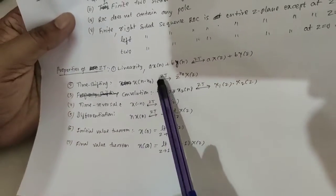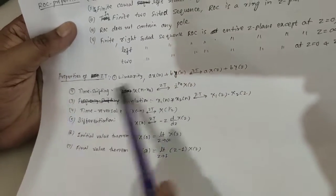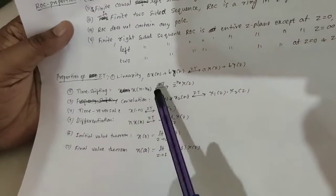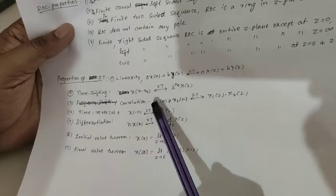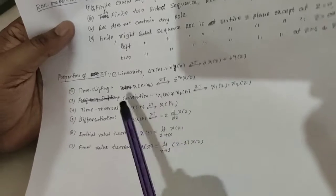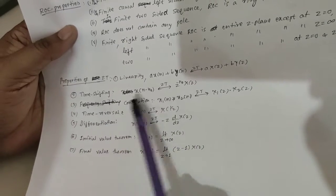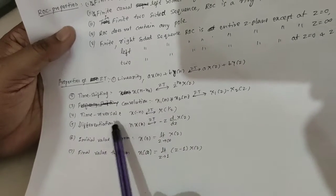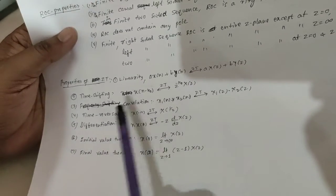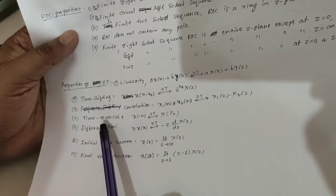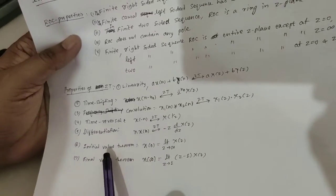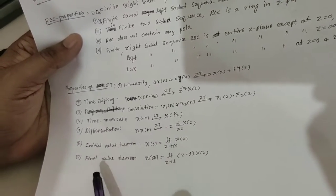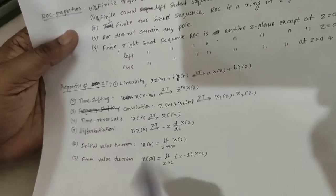Properties of Z-transform are the same as Laplace transform properties: linearity property, time shifting property, convolution property, time reversal property, differentiation property, initial value theorem, and final value theorem.